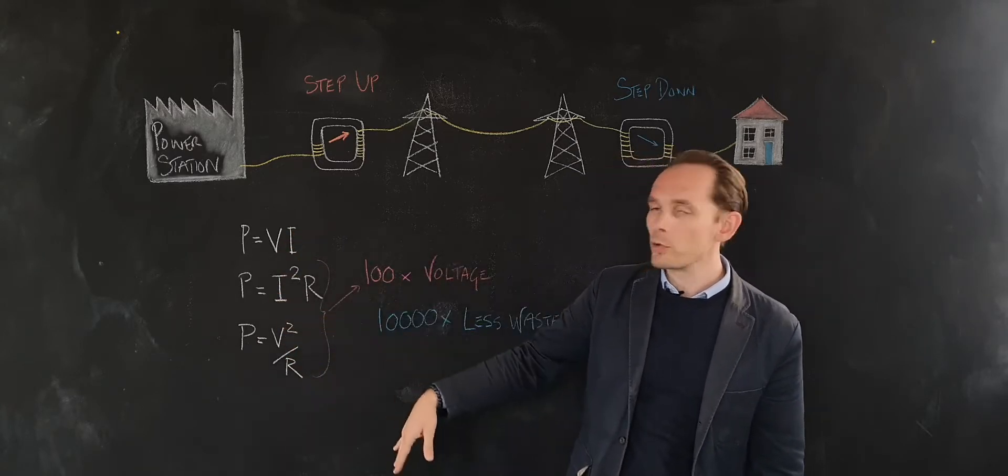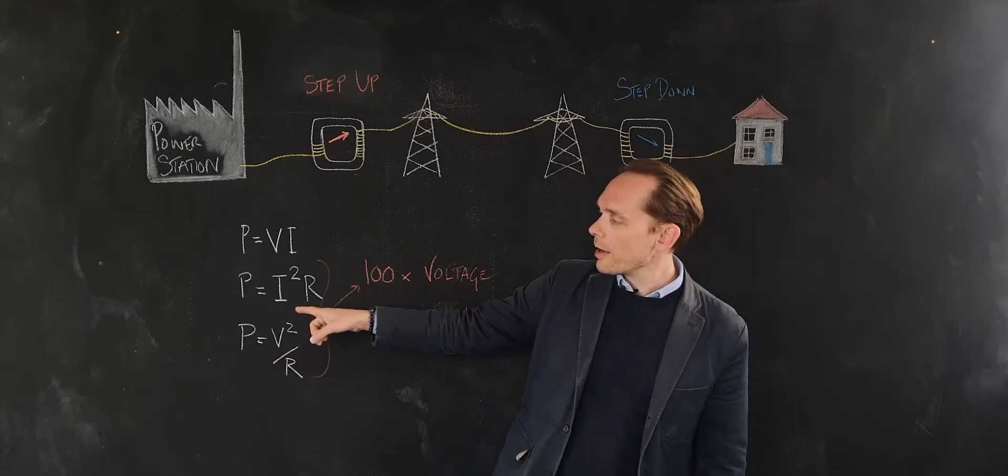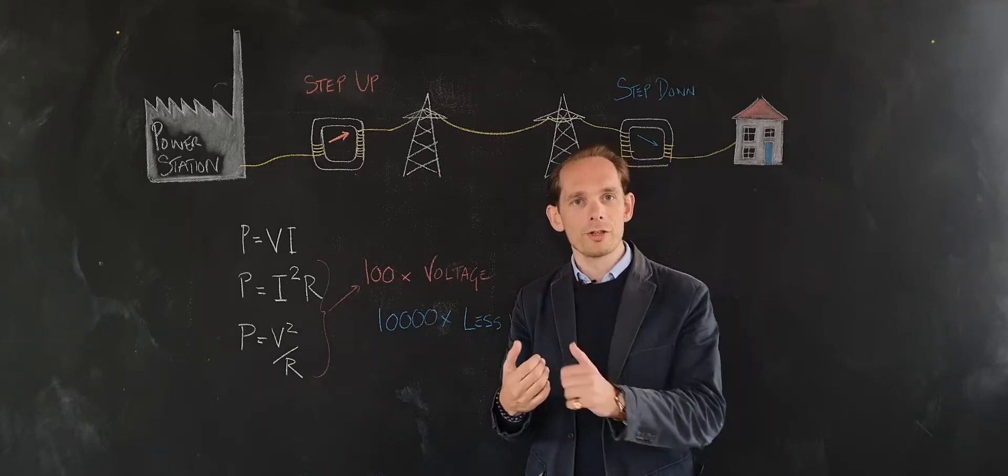Power is proportional to the square of the current or the square of the voltage. So the energy you lose is far less if you reduce the current.